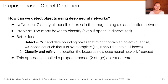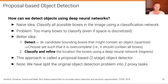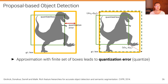This approach is called a proposal-based or two-stage object detector. We have split the original object detection problem into two proxy tasks: detecting a smaller set of candidate bounding boxes — quantization of the bounding box space — and classifying and refining that set. By approximation with a finite set of bounding boxes we get a quantization error, illustrated here with a picture of a dinosaur where the quantized box is close but not perfect.